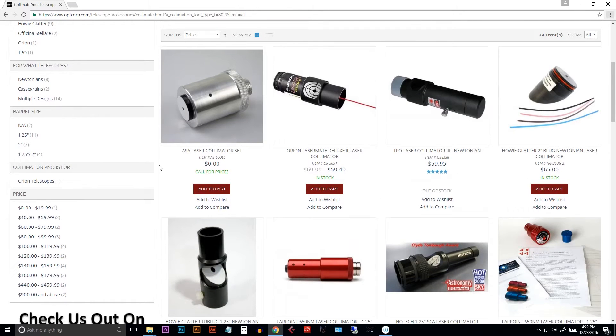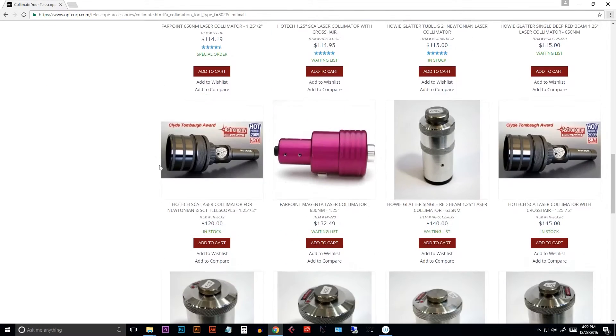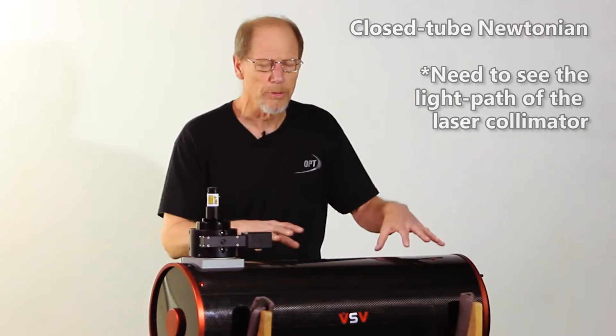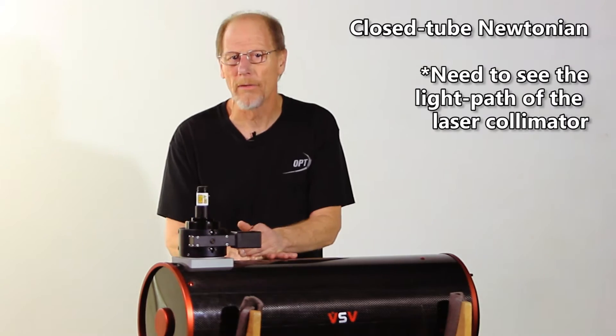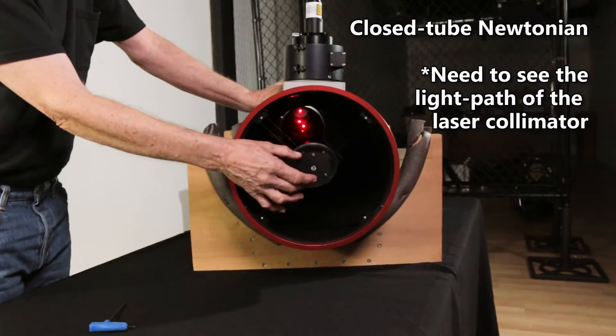You can get two-inch lasers, one-inch lasers, you can get ones with patterns on them. In this case we're using it on a closed tube Newtonian. We need to actually see the return path of the light as it comes off the primary.